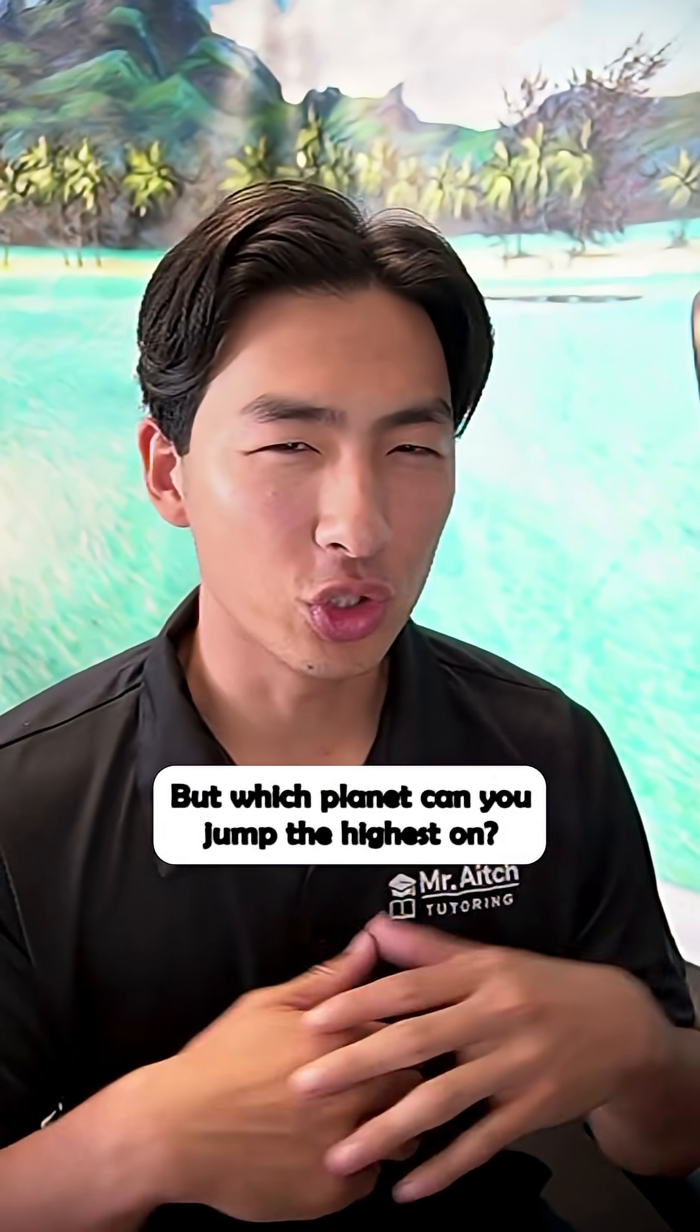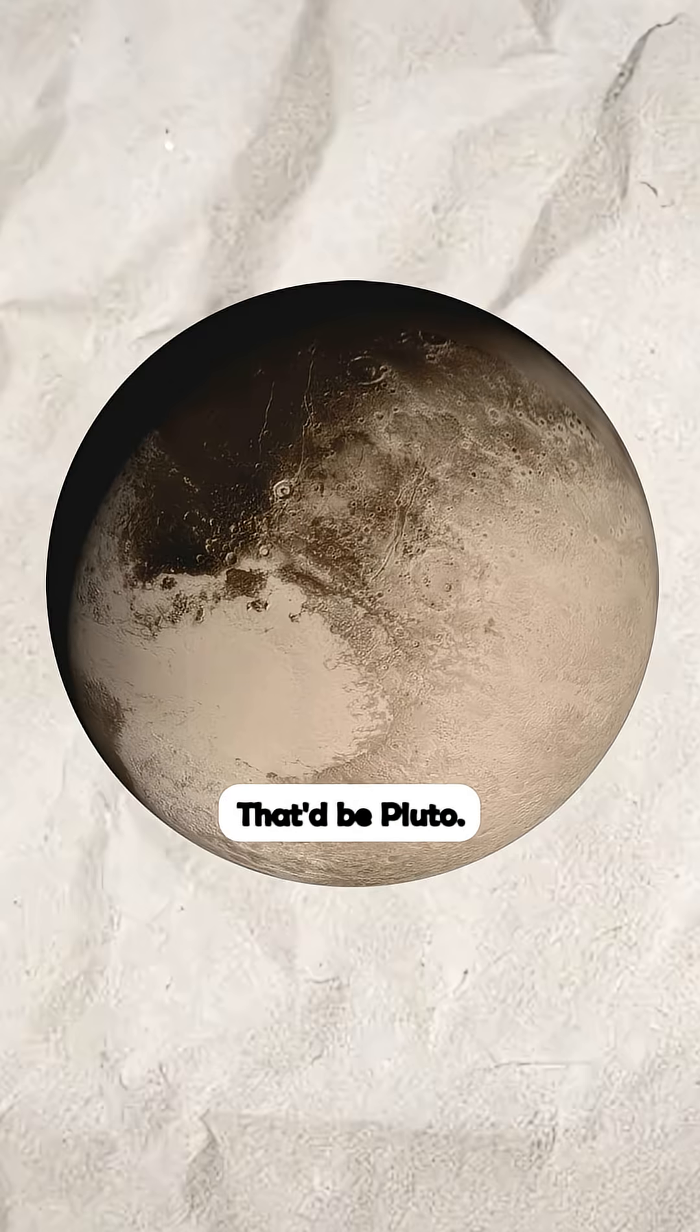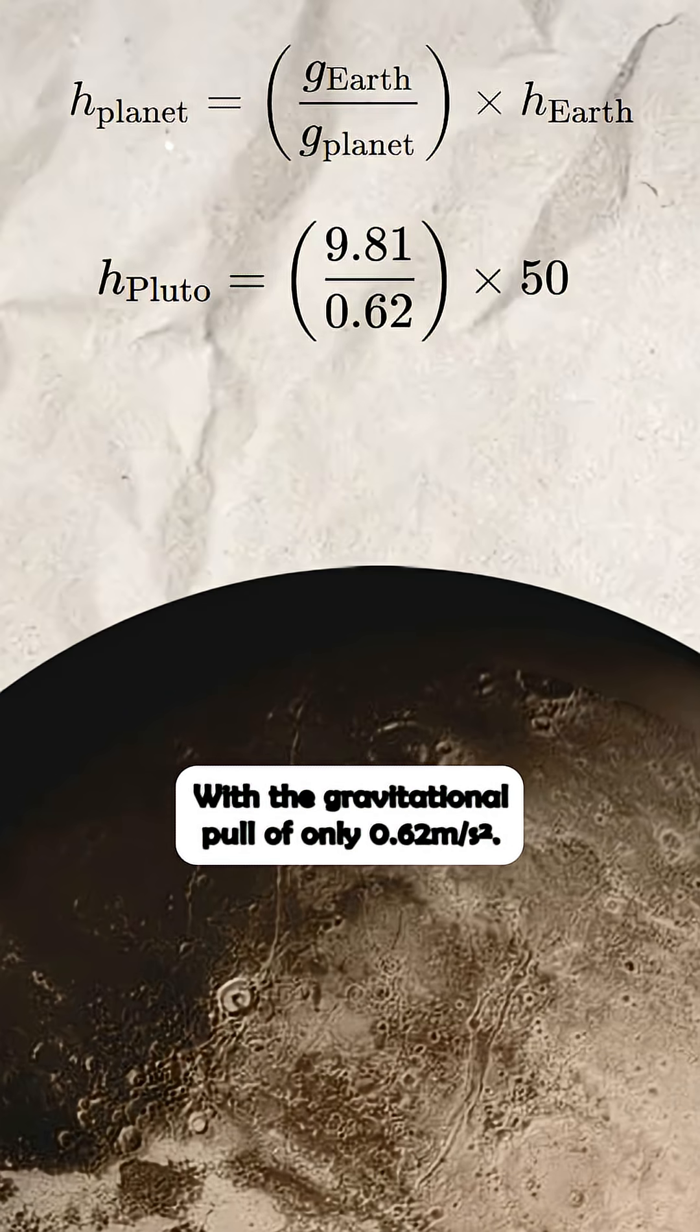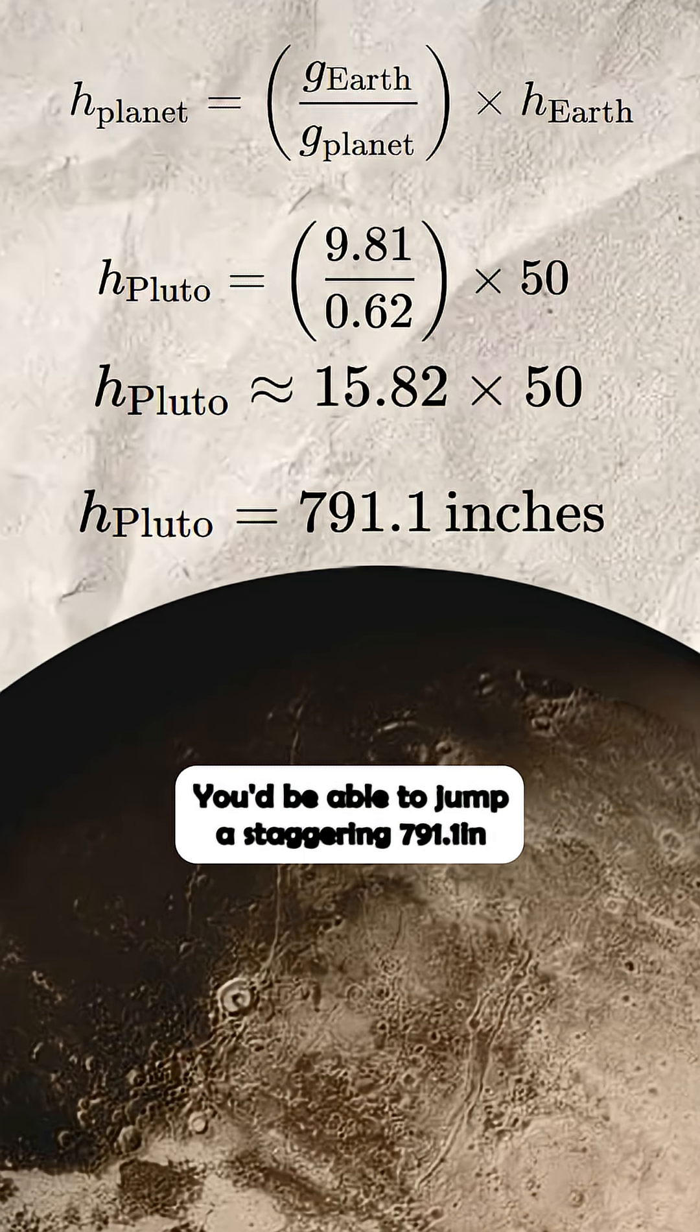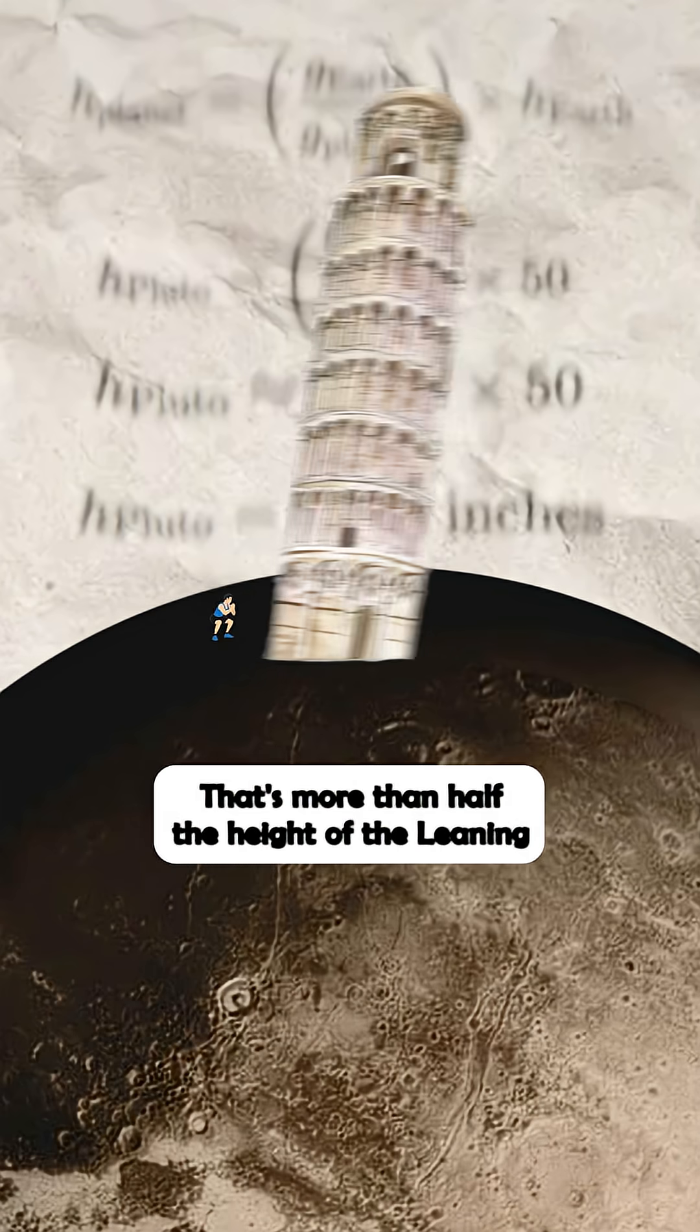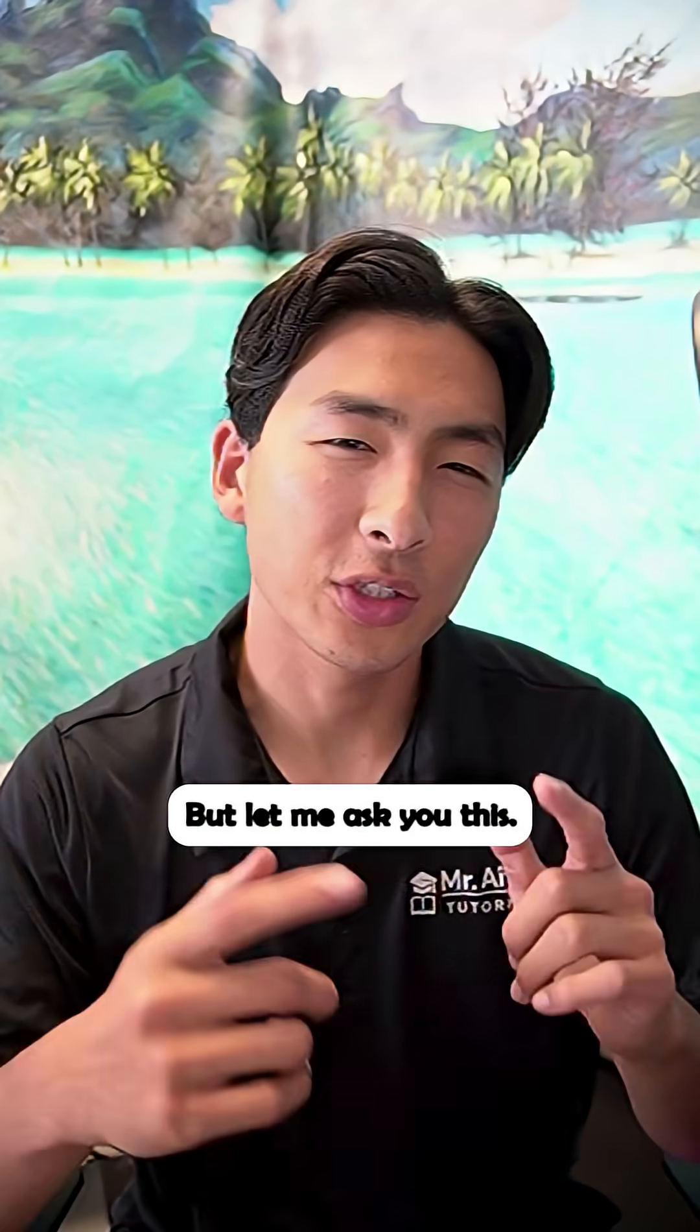But which planet can you jump the highest on? That'd be Pluto, with a gravitational pull of only 0.62 meters per second squared. You'd be able to jump a staggering 791.1 inches in the air. That's more than half the height of the Leaning Tower of Pisa.